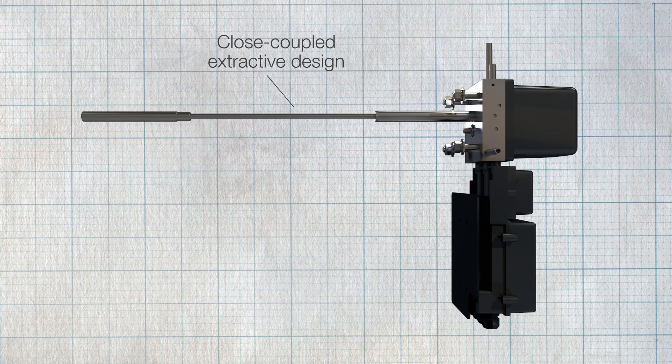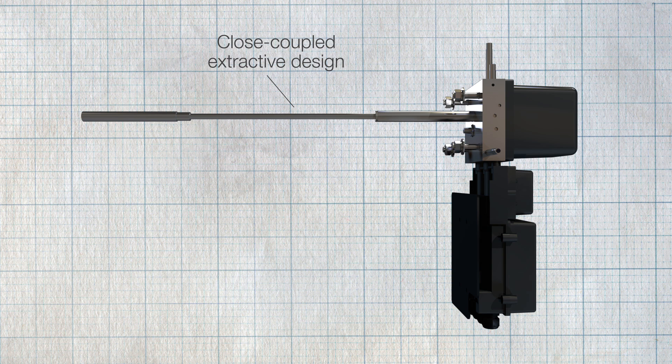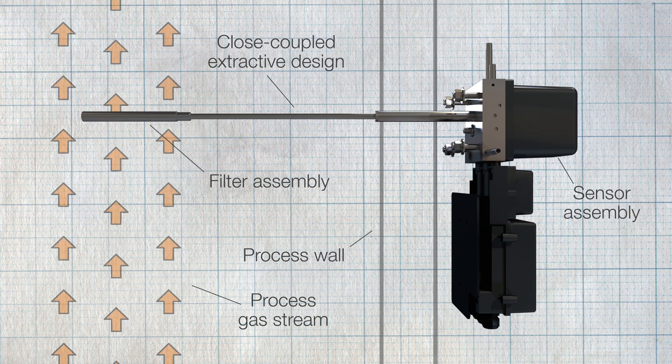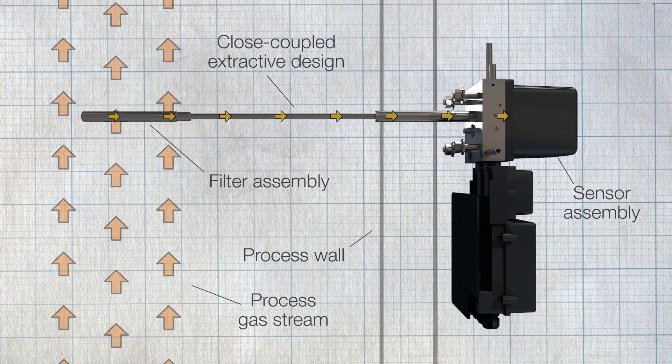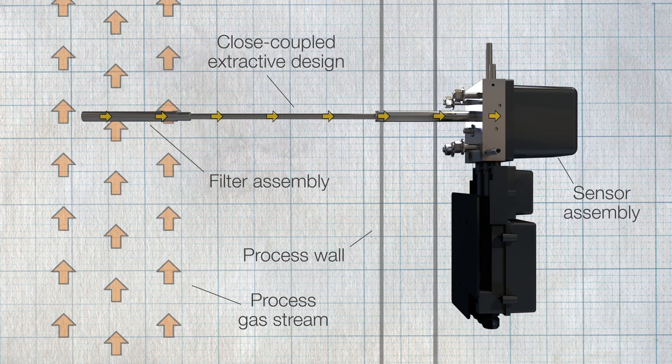Featuring a close-coupled extractive design, the AZ-40 uses a sensor assembly mounted on the process wall, with the probe and filter assembly extending into the process gas stream. The sample is extracted from the process and fed through the sensor head using an air-powered ejector.